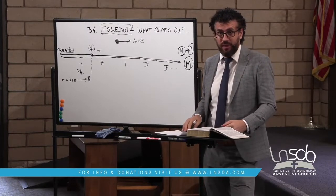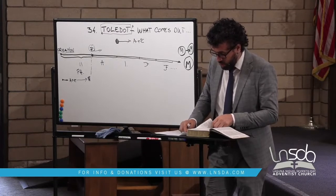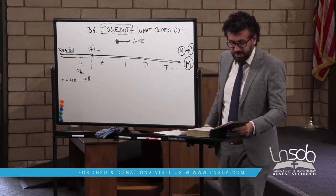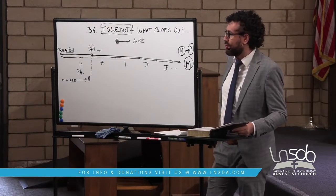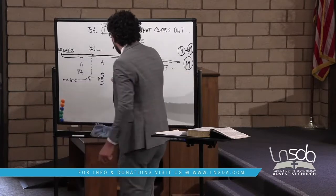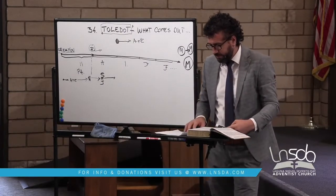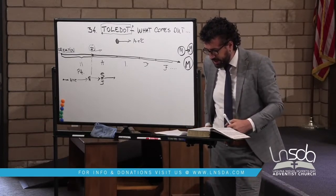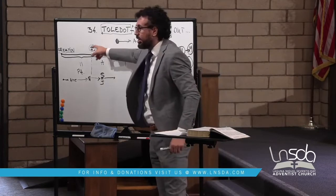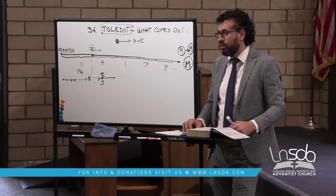The next Toledot is the one of the sons of Noah in Genesis chapter 10, verse 1: 'Now this is the genealogy of the sons of Noah — Shem, Ham, and Japheth.' From the sons of Noah, who comes out? If you read the whole description, you will see that all the nations of the world come out from them, just because of the reset of history that happens at the flood.